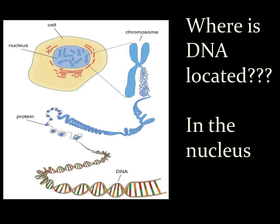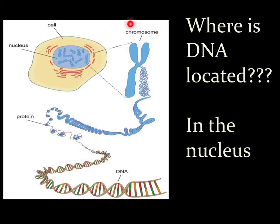This slide is an important one for understanding the structure and relationship of DNA to the structures actually found in the nucleus of cells. When DNA is all wound up and coiled up, it forms a structure called a chromosome, and chromosomes are what are found in the nucleus of a cell.